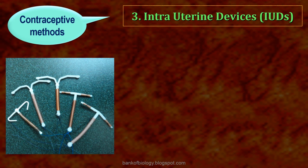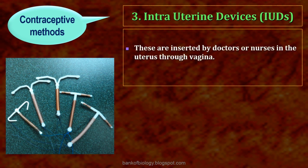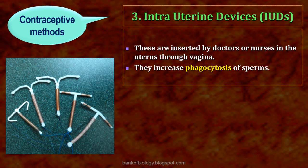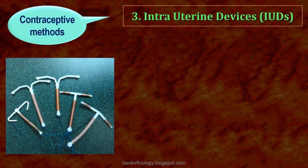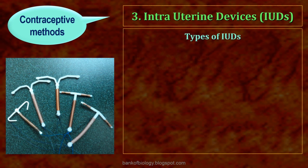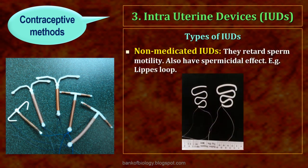The 3rd contraceptive method is Intra-Uterine Devices or IUDs. IUDs are inserted by doctors or nurses in the uterus through the vagina. They increase phagocytosis of sperms. There are three types of IUDs: Non-Medicated IUDs, Copper-Releasing IUDs and Hormone-Releasing IUDs. Non-Medicated IUDs retard sperm motility and also have a spermicidal effect. Example: Lippes Loop.